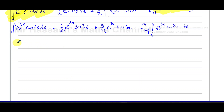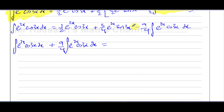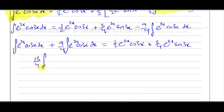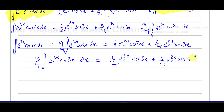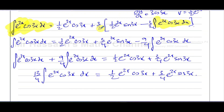Adding (9/4) times the integral of e^(2x)·cos(3x) dx to both sides: the left-hand side becomes 1 + 9/4 = 4/4 + 9/4 = 13/4 times the integral of e^(2x)·cos(3x) dx, and the right-hand side equals (1/2)e^(2x)·cos(3x) plus (3/4)e^(2x)·sin(3x).